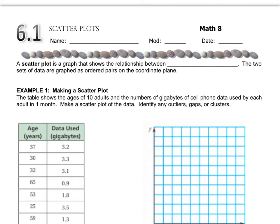In chapter 6 we look at a few more types of data graphs. You've done bar graphs, histograms, circle graphs, and all those things. In this chapter we learn about a couple more, and the first one is called a scatter plot. A scatter plot is a graph that shows the relationship between two data sets.